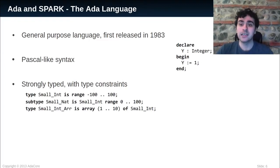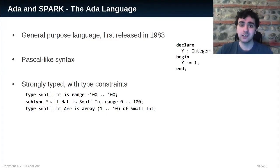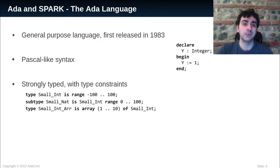Ada also natively supports arrays. For example, SmallIntA is a type of array indexed by integers from 1 to 10 and containing values of type SmallInt.